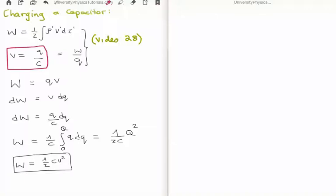We can rearrange this to say that it's equal to work done divided by the charge. So W is equal to q times the potential. dW is equal to V times dq. So that's just a theorem from partial derivatives, which I've covered in many other videos.